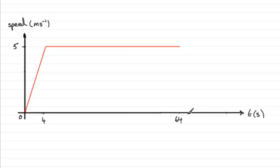And then she moves with constant deceleration for a further 20 seconds. So a further 20 seconds is going to take us to 84 seconds along here. And constant deceleration is going to mean that it's a straight line coming downwards.